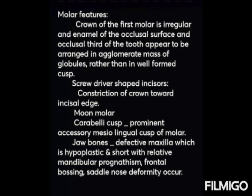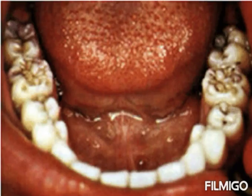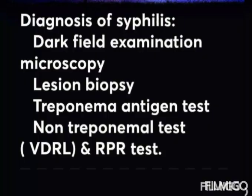Screwdriver-shaped incisor, moon molar, and Carabelli cusp are the key clinical features to note in congenital syphilis. Examples show screwdriver-shaped incisors — upper and lower — with constriction toward the incisal edge. Note the molars: there are no well-developed cusps, and there is a prominent globule appearance.